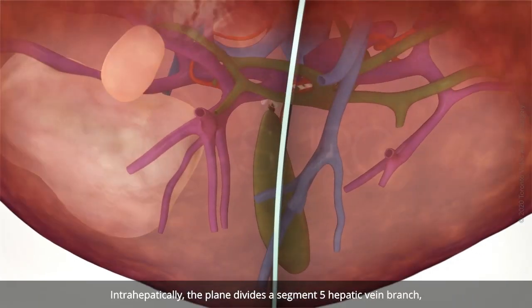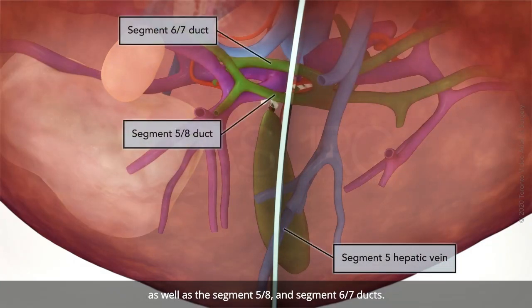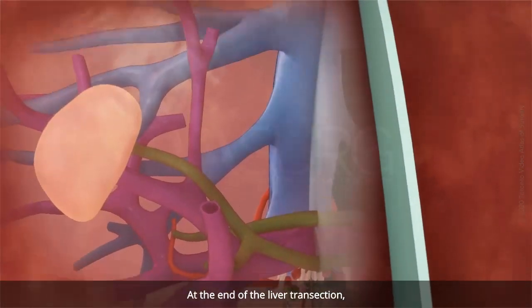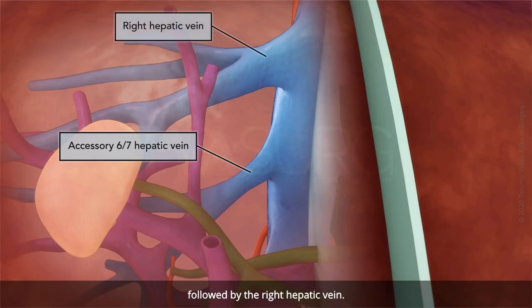Intrahepatically, the plane divides a segment 5 hepatic vein branch, as well as the segment 5-8 and segment 6-7 ducts. At the end of the liver transection, a large accessory 6-7 hepatic vein branch is divided at its root, followed by the right hepatic vein.